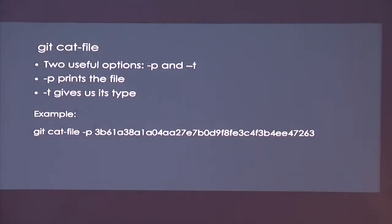There's a tool we use in Grawler called git cat-file. It has two really useful options: dash p and dash t. Dash p prints the file, and dash t gives us its type.